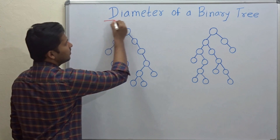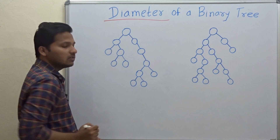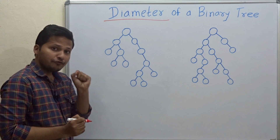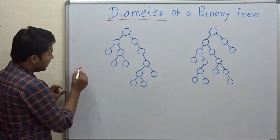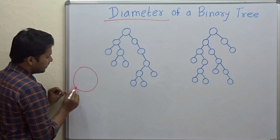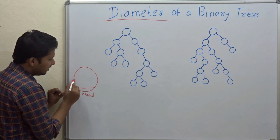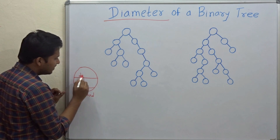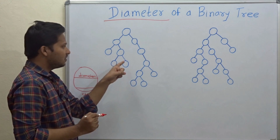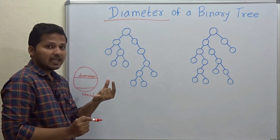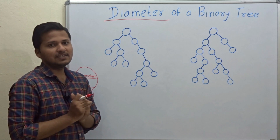What is the diameter of a binary tree? It is the number of nodes on the longest path of that binary tree. This will remind you of the definition of diameter of the circle — a line that is not the longest is called a chord, but the line which is the longest is called the diameter. The same thing applies in the binary tree: the path which has the highest number of nodes is the diameter of the binary tree.